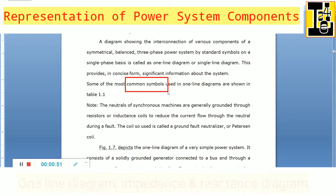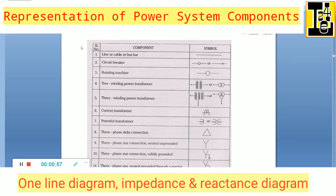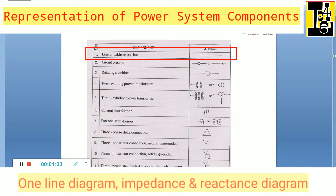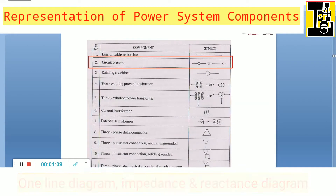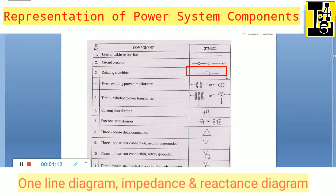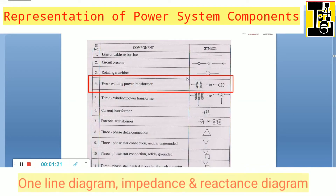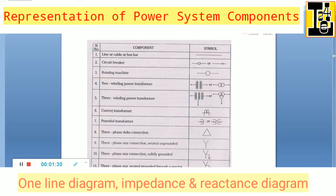Some of the most common symbols used in the one line diagram are shown here. The line, cable, or bus bar is represented like this. The circuit breaker is represented in this way. The rotating machine is represented like this. A two winding transformer is symbolically represented in this way — it can also be shown as two circles crossed together.